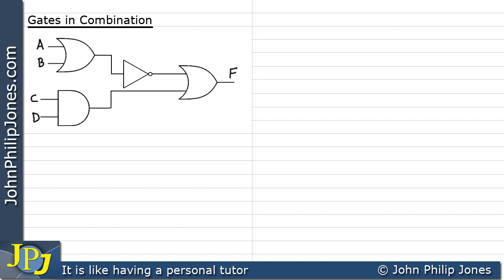Here we have a combinational logic circuit made out of a variety of different gates. Starting with the OR gate in the top left-hand corner, its output is A or B. Moving to the AND gate below, the output is C and D. Now C and D is the input to the next OR gate. However, A or B goes into a NOT gate, so the output of the NOT gate is NOT(A or B). This NOT(A or B) then goes as the input to the OR gate.